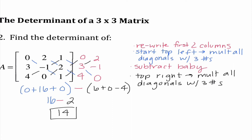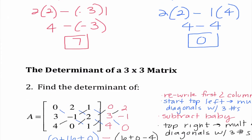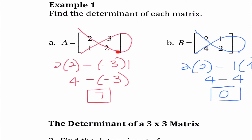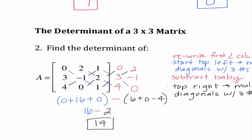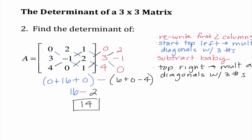Even though this takes a little bit longer, notice it is the same pattern: going from the top left, multiplying, subtracting, then multiplying from the top right — the exact same pattern we use in the two by two. That's how we find determinants, and that's a lot of your homework tonight — just finding determinants.